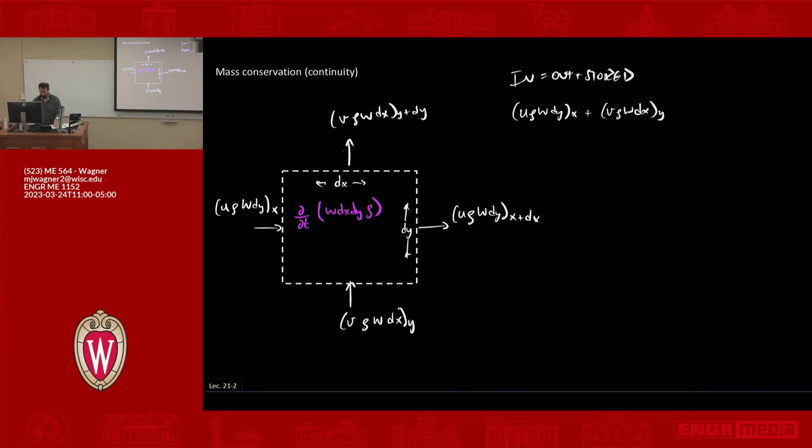So then that has to equal what's going out. What's going out is u ρ w dy at x plus, we have to now expand this term out just like we did for Fourier's law in conduction. So that becomes that term plus the partial with respect to x of u ρ w dy at x times dx.